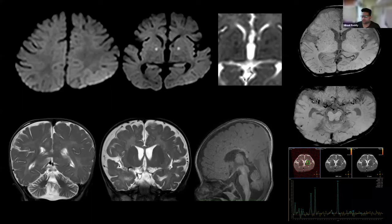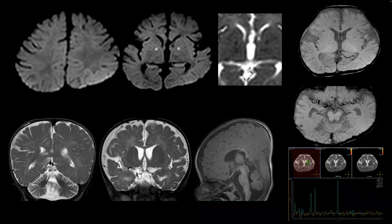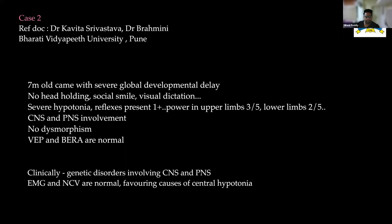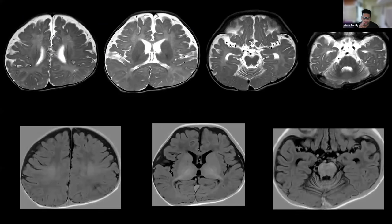I cannot see hemorrhagic foci — these are just vessels. The tortuosity and possibly some subdural fluid doesn't fit Menkes disease, and the lesions in the basal ganglia, hair texture is normal — even the basal ganglia changes are slightly asymmetric for Menkes. The case is open for panelist comments.